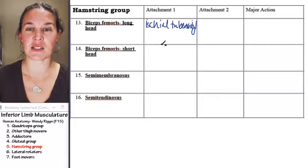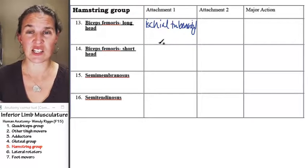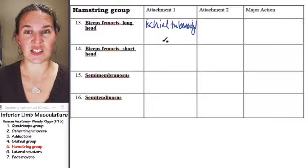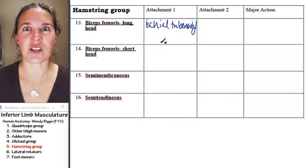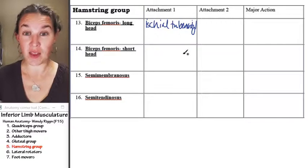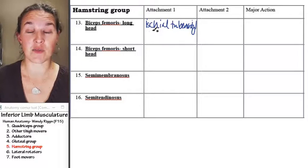So when you sit on somebody's lap and dig your ischial tuberosity into their thigh, into their quadriceps group, that is going to make them very sad, and you probably won't be sitting on their lap for very long.